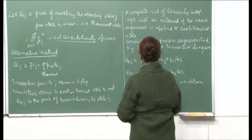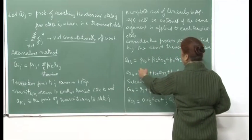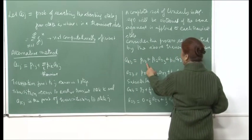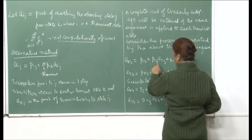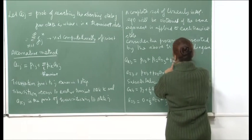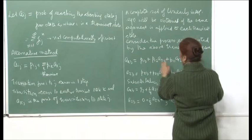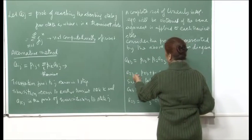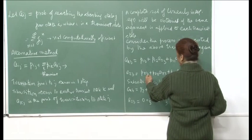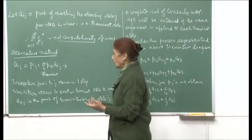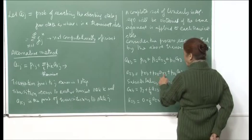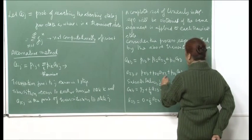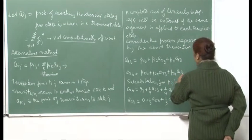Let us take the transition diagram. For transient state 1 wanting to go to absorbing state 3, writing out the equations gives: p_13 — either you do it in one step — or you go to transient state 2 with p_12 and then A_23, or you follow the loop p_11 into A_13. Similarly, for A_23: this will be p_23 plus p_22 * A_23. From 2, you can either transition to 3 in one step (p_23 is 0 in our case), or go 2 to 2 loop then A_23, or go from 2 to 1 then 1 to 3.